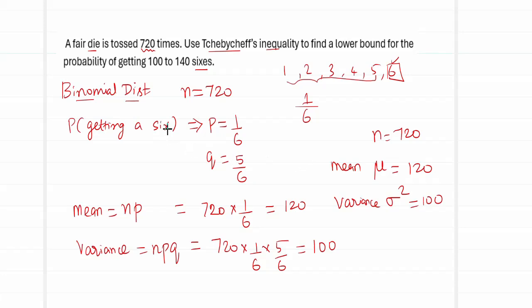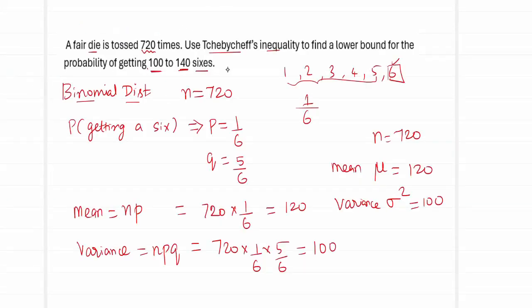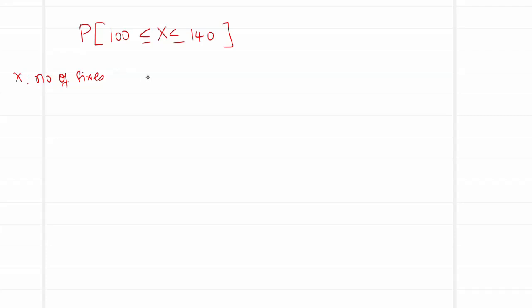Let capital X denote the action of getting a 6. In this case, the target is between 100 to 140 sixes. So what we require is the probability of the number of 6s ranging between 100 to 140. This has to be compared with the two formulas of Chebyshev's inequality, and whichever is more suitable, we go for it.